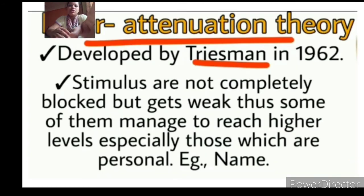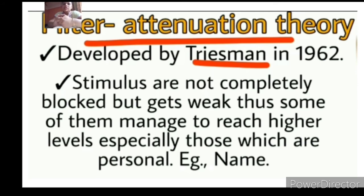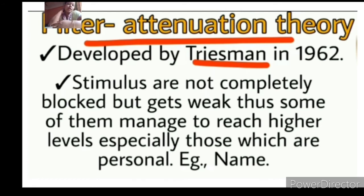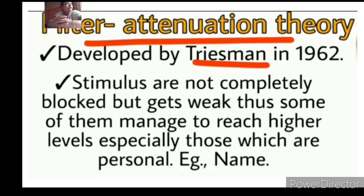There is another theory given by Treisman, known as filter attenuation theory. According to this theory, the stimuli which get blocked in a bottleneck situation do not get deleted completely — rather, they get weak. Sometimes a weaker stimulus can also lead to higher order processing. For example, when you enter a room you might notice a pink color box or a yellow color teddy.